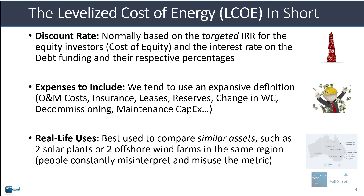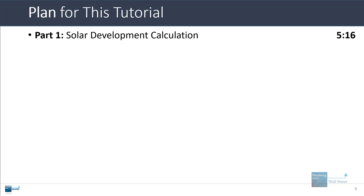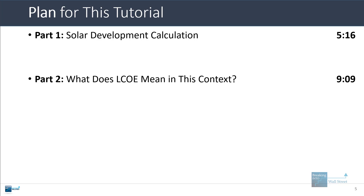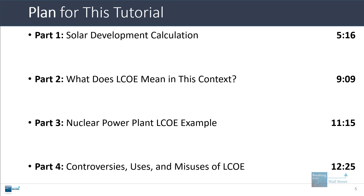In real life, the levelized cost of energy is best used to compare similar assets, such as two solar plants in the same region or two offshore wind farms in the same part of the ocean. People often misinterpret and misuse the metric, and it doesn't always mean what banks like Lazard claim in their presentations. So we'll go through the solar development calculation in more detail, then explain what the levelized cost of energy actually means, then go through a nuclear power plant example in South Korea, and finally address some of the controversies, uses, and misuses of this metric.